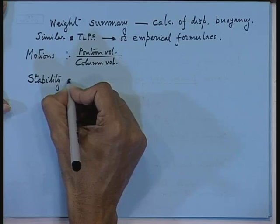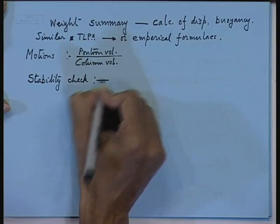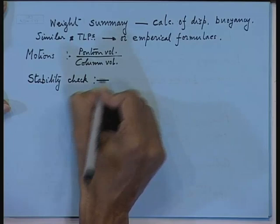If the cable is loose or has curvature, there will be excessive motions and cables will try to get twisted — warping will come and the platform will try to rotate, leading to cable snap. You take recourse to empirical formulas, decide on the displacement — that is the first part of sizing. The second part is motion calculation, the most important being pontoon volume divided by column volume, which determines heave and surge motions. The next is stability check.